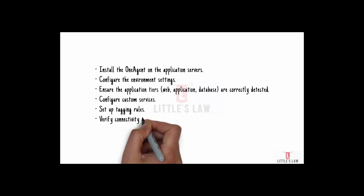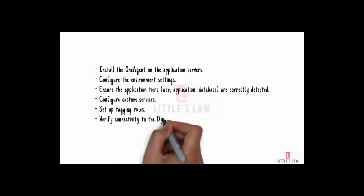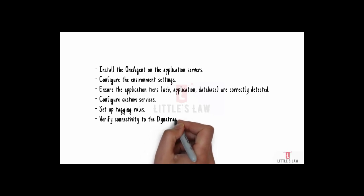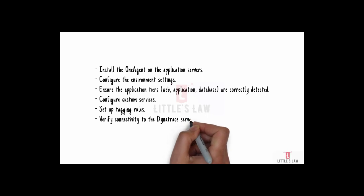Moving on to the second step: configuring the environment settings. After installing the OneAgent, you need to configure the environment settings in Dynatrace to ensure it correctly maps and monitors the infrastructure. This includes setting your environment ID and API tokens — which is very important because if the API tokens are not properly set up, you may get a 404 or no response from Dynatrace. You should also configure any specific settings related to your environment, such as network zones and proxies.